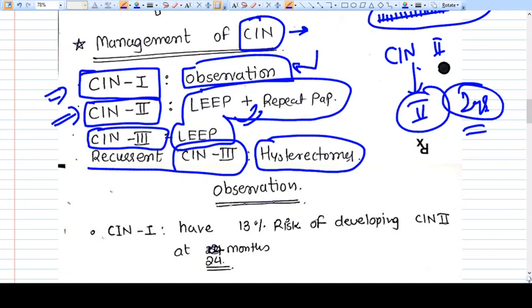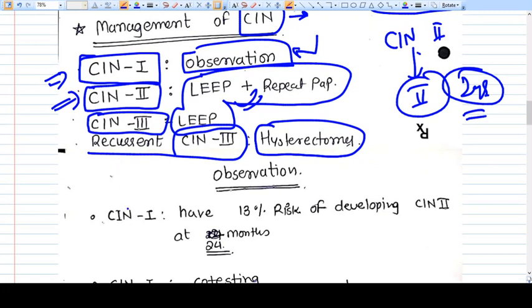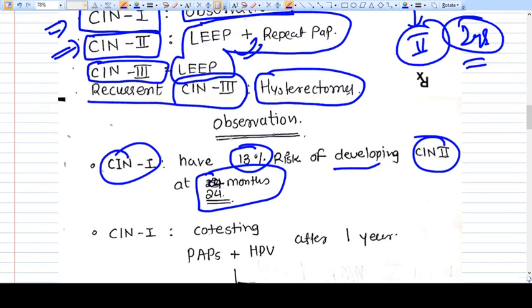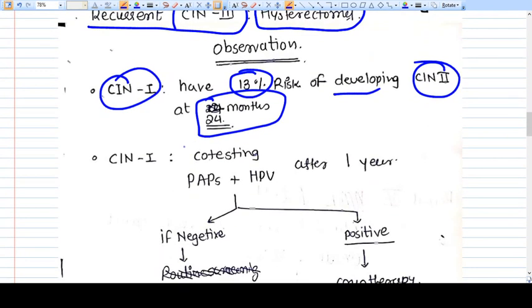How we follow up patients of CIN after treatment? CIN1 has 13 percent risk of developing CIN2 at 24 months, that means two years. So what we do is we monitor or we do screening test repeatedly. Once we found CIN1, we do co-testing. What is co-testing? Pap smear and HPV testing.